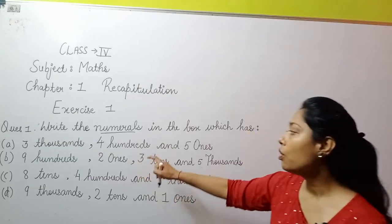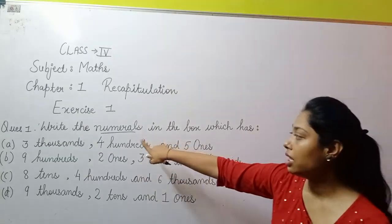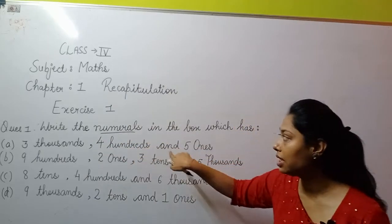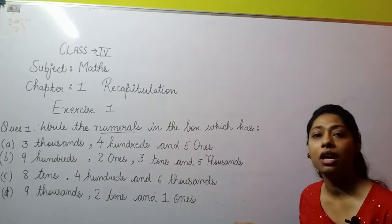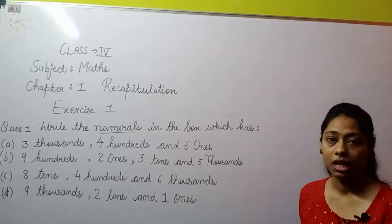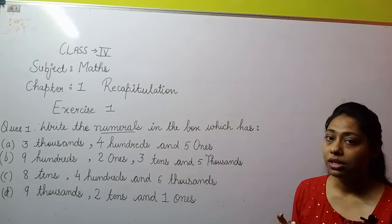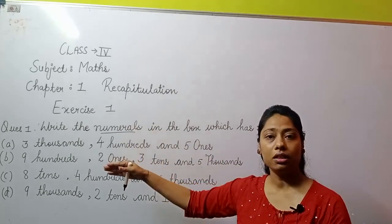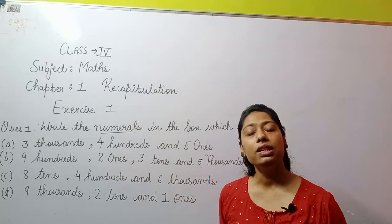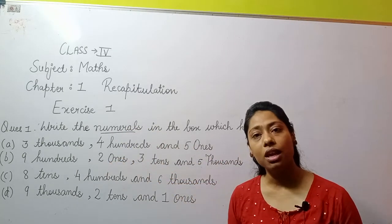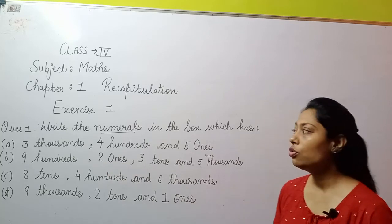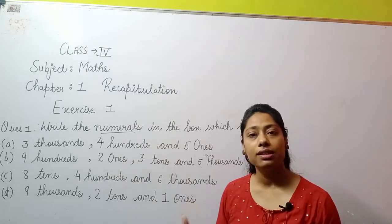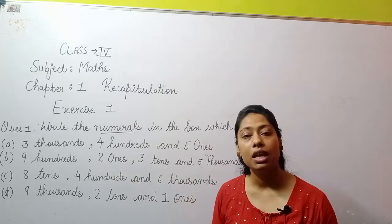Numerals yaani ke un number names se aap numbers bana kar likhne hain. Numerals aapke number names se aap numbers banaate ho — usse aap numerals kehte hain. So one, two, three, four, five, six, seven, eight, nine — these are your numerals.